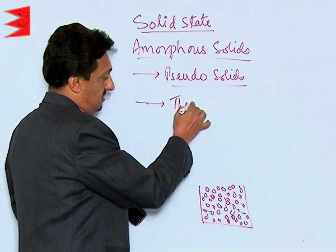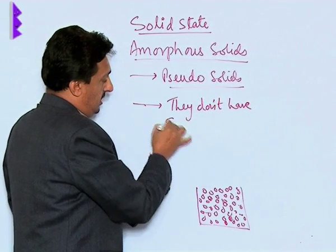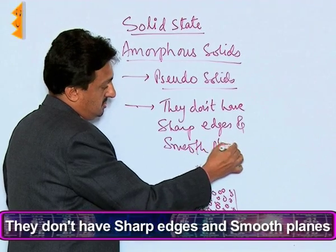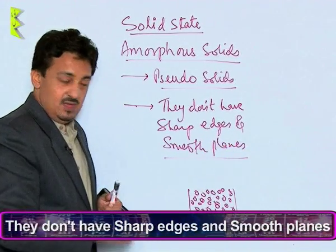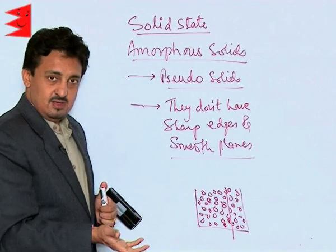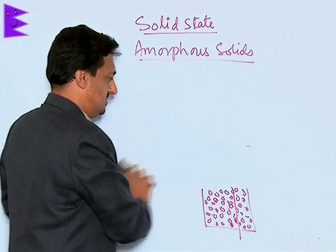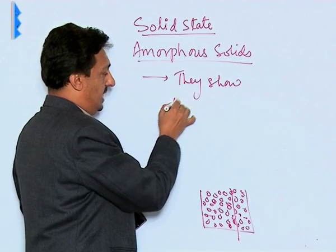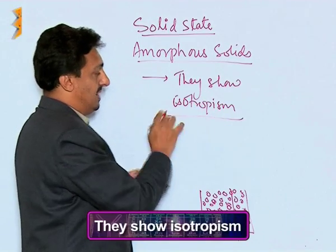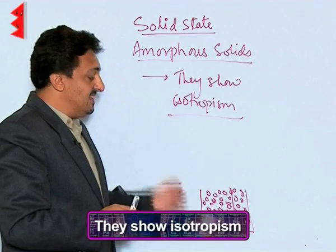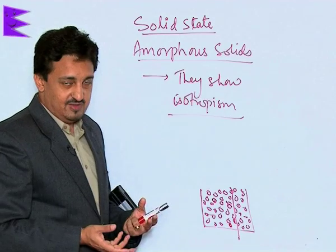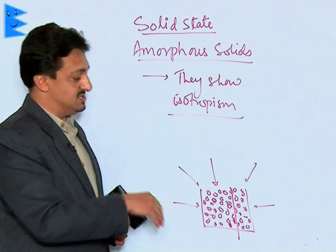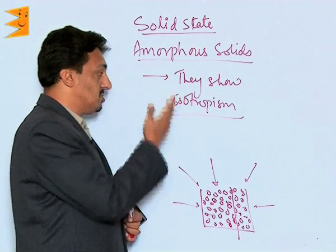Amorphous solids do not have sharp edges and smooth planes; they always have rough planes because the particle arrangement is not regular. They also show isotropism, which is the opposite of anisotropism. These solids show the same property with the same magnitude from any direction, because the arrangement is random from all sides. That is why they show isotropism and not anisotropism.